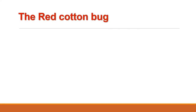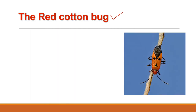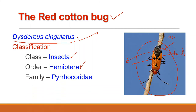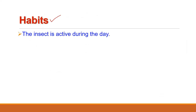Now we will study three more pests of cotton, covering only their systematic position, habits, and nature of damage as per the syllabus. First is the red cotton bug, a very serious pest of cotton. Its most prominent feature is its bright red or orange color with black spots and markings. The zoological name is Dysdercus cingulatus; it belongs to class Insecta, order Hemiptera, and family Pyrrhocoridae.